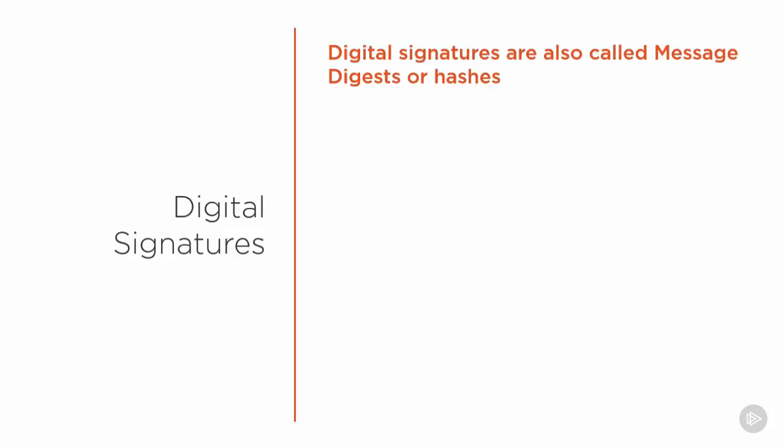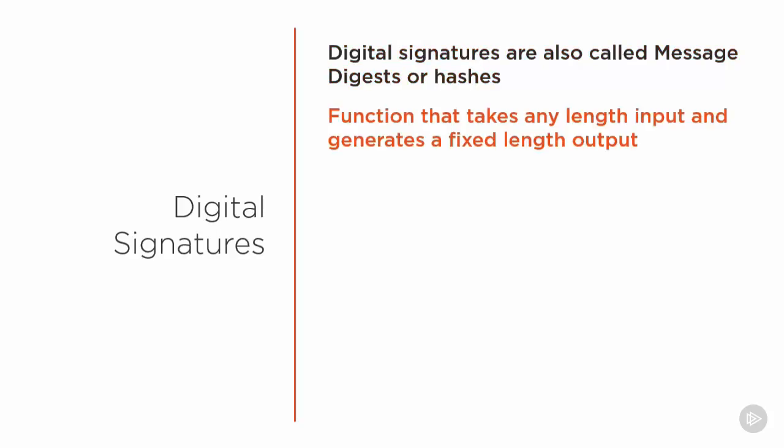We just mentioned digital signatures with the clip on PKI, but what are digital signatures? Digital signatures can also be referred to as message digests or hashes. They are essentially a mathematical function that takes any input size and generates a fixed-length output, which is used for validation purposes that the signature is genuine and not being impersonated.